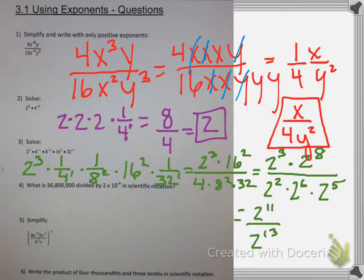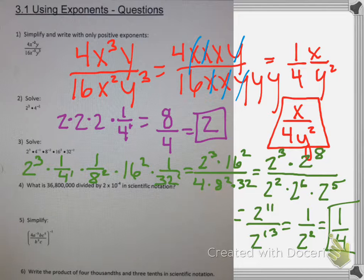So this becomes 2 to the 11th over 2 to the 13th. When I divide exponents, I subtract them, so this becomes 11 minus 13, or 1 over 2 squared, which is 1 over 4.